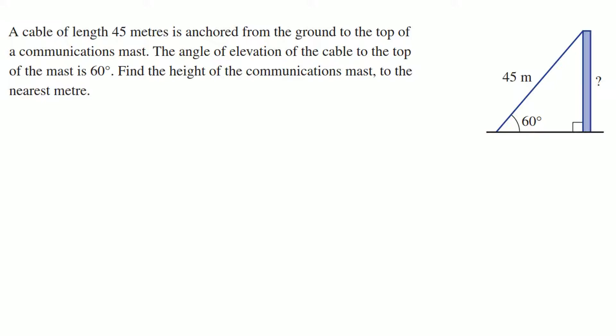Question two, I think this is. Cable of length 45 meters is anchored from the ground to the top of a communication mast. There we have, again, the angle of elevation of the cable to the top of the mast is 60 degrees. I want the height of the mast. So once again, we label our sides, H, A, and O. And this time we want to find the opposite by using the hypotenuse. So see how the adjacent is irrelevant there. We don't know it and we're not trying to find it.